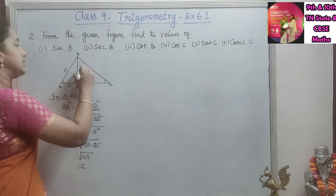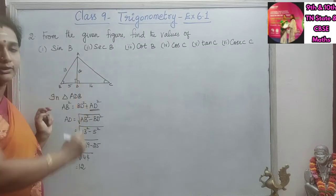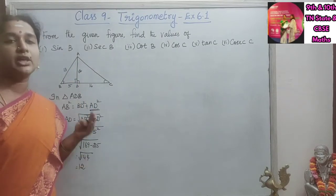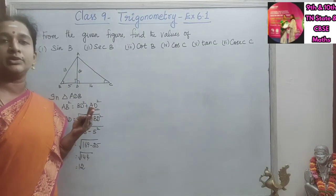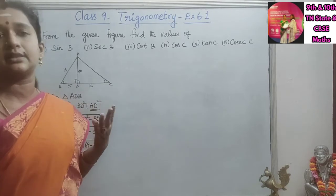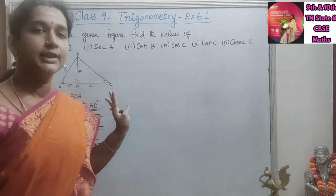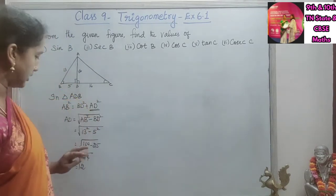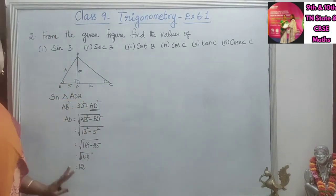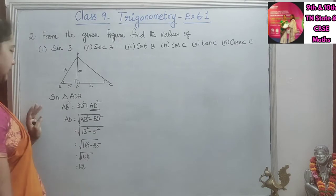So the length of AD is 12 units. Since it is a ratio, we cannot say meters or centimeters — it is just units. So AD is equal to 12.